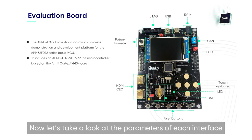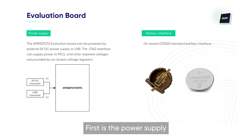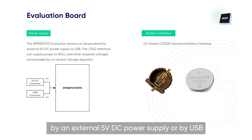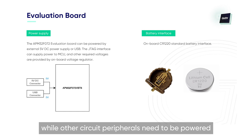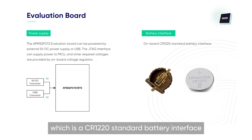Now let's take a look at the parameters of each interface. First is the power supply. The APM32F072EVAL evaluation board can be powered by an external 5VDC power supply or by USB. The JTAG interface can directly power the MCU, while other circuit peripherals need to be powered by the onboard voltage regulator. There is also a battery interface, which is a CR1220 standard battery interface.